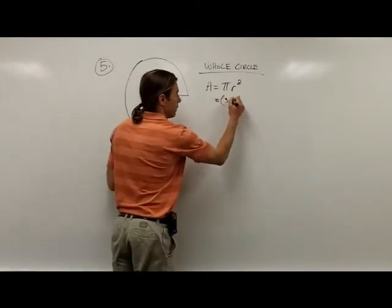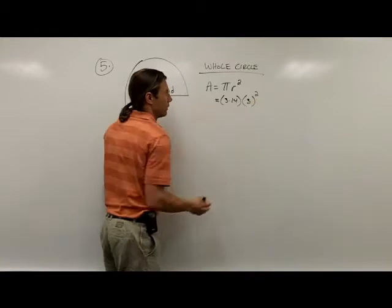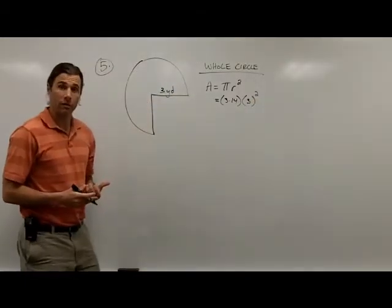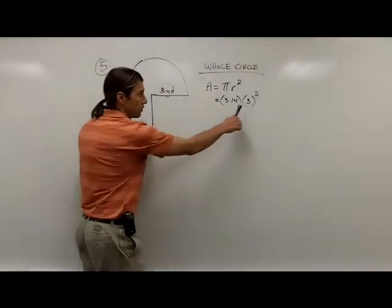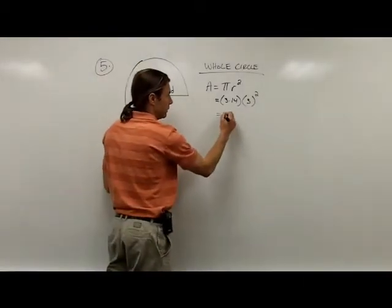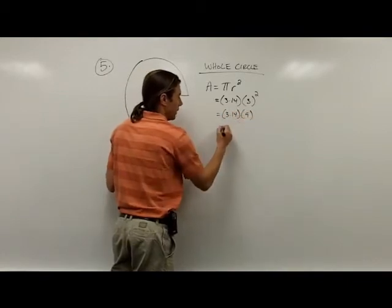So I'm going to have 3.14 times 3 to the second power. I'm going to follow the order of operations again, so I would do exponents first. 3 to the second power is 9, so I'm going to take 3.14 times 9.